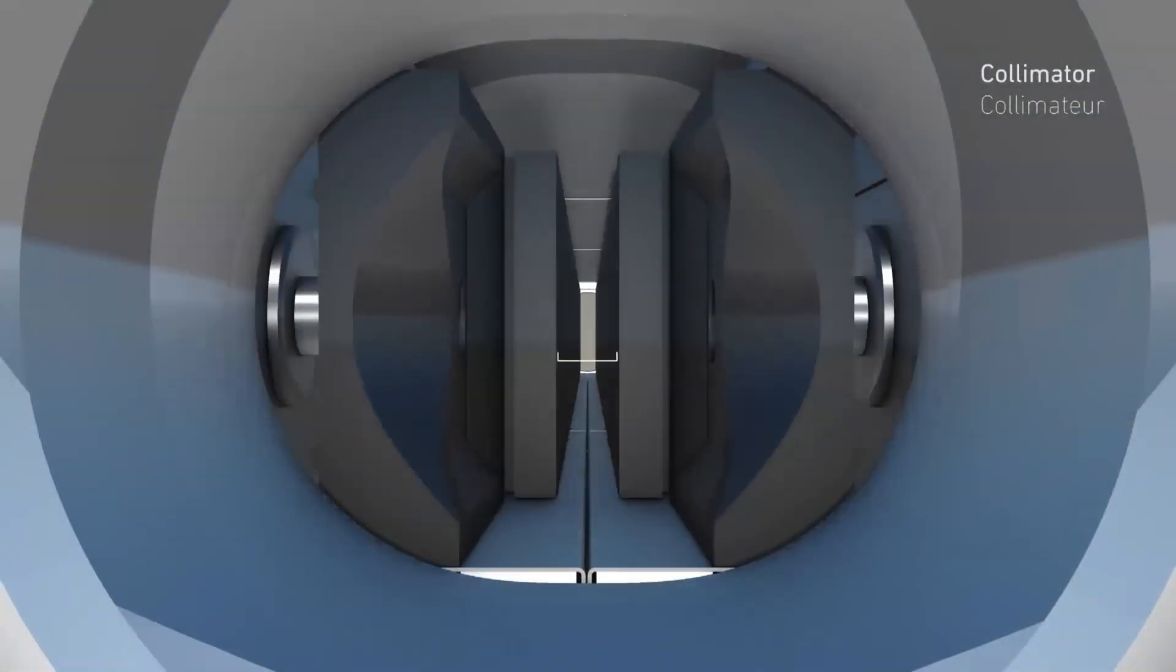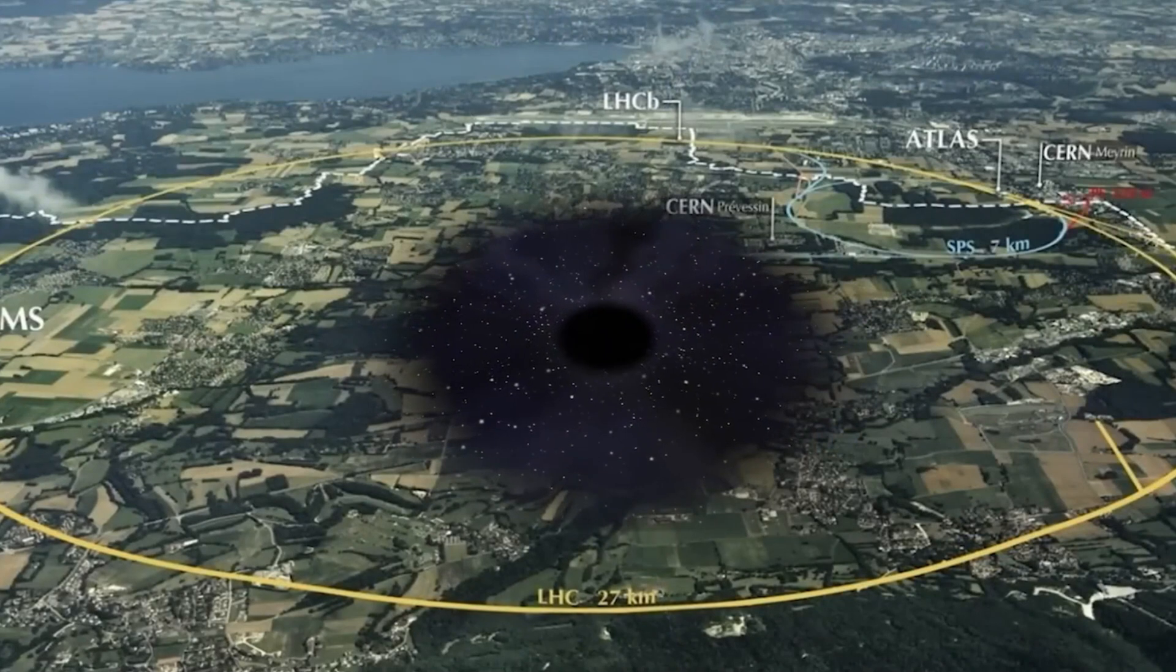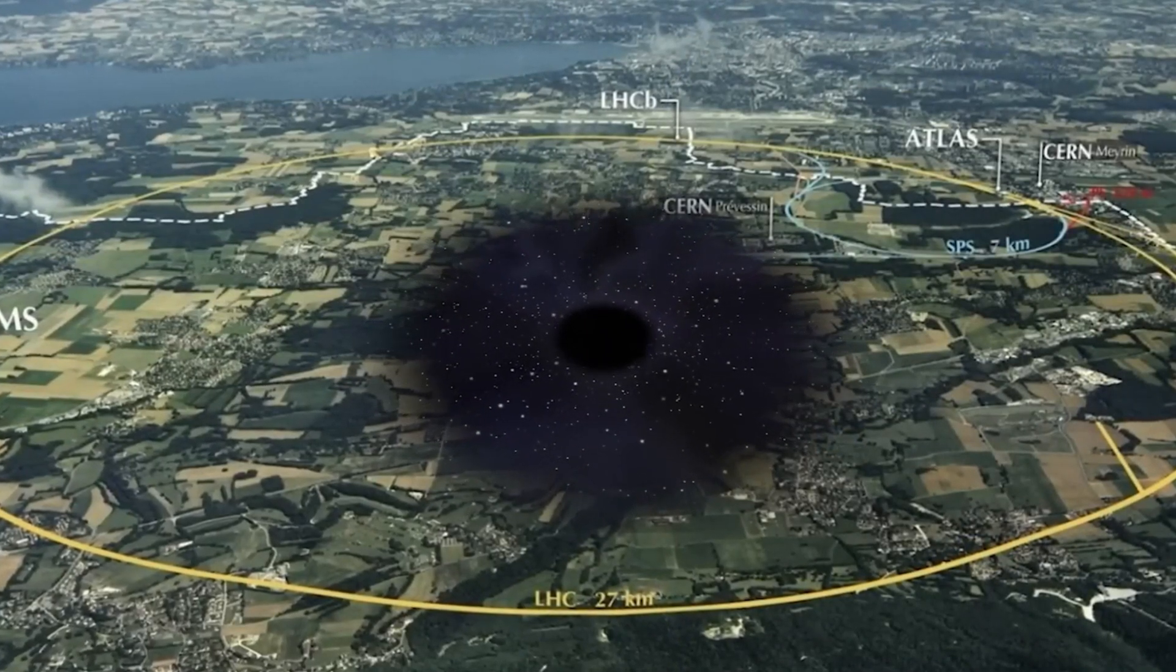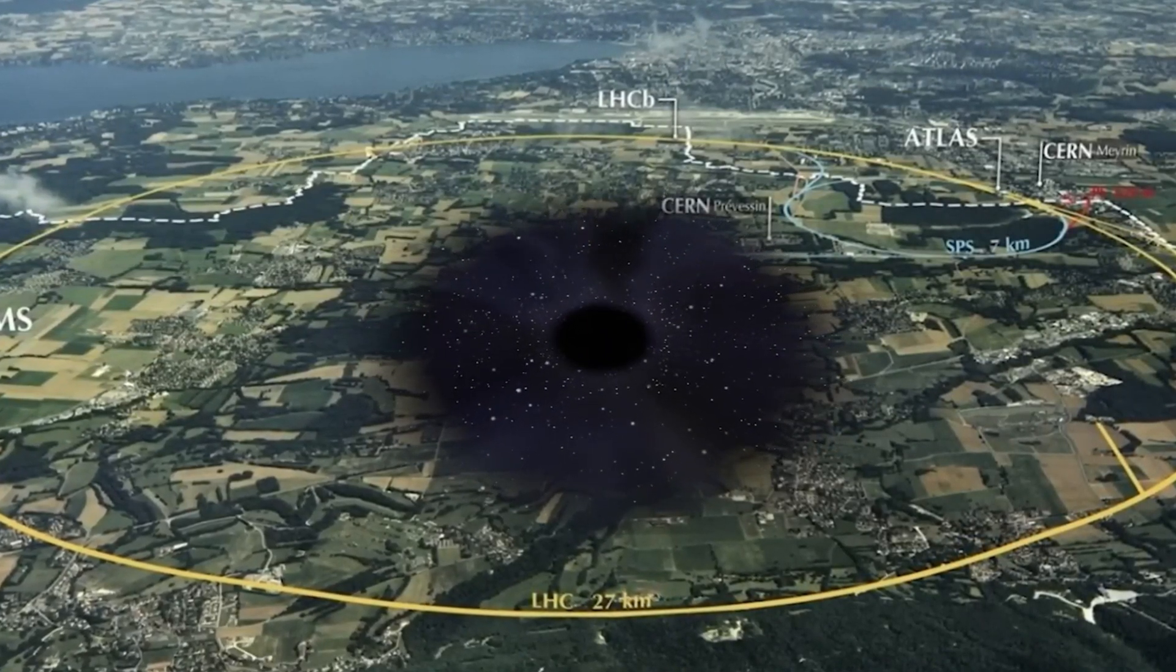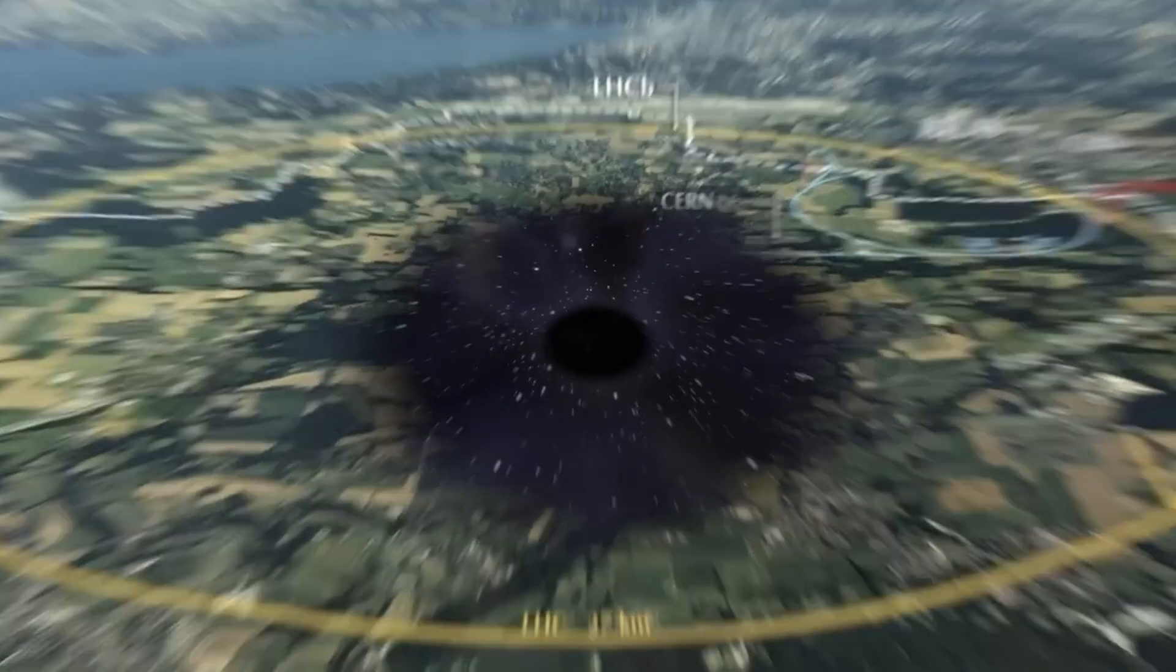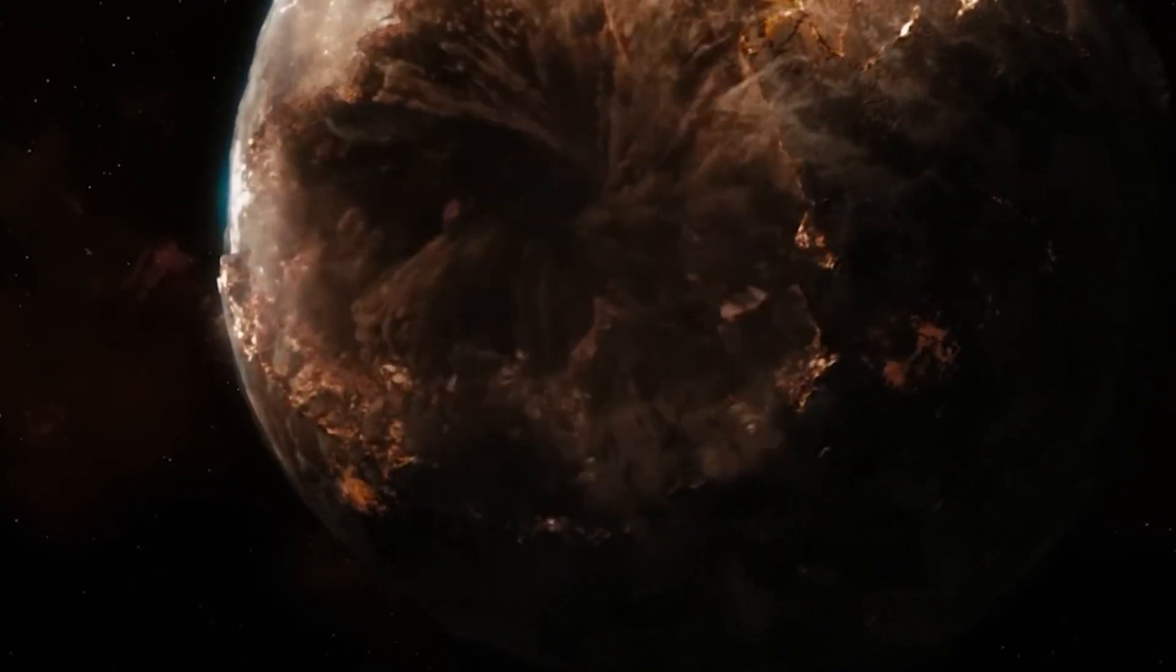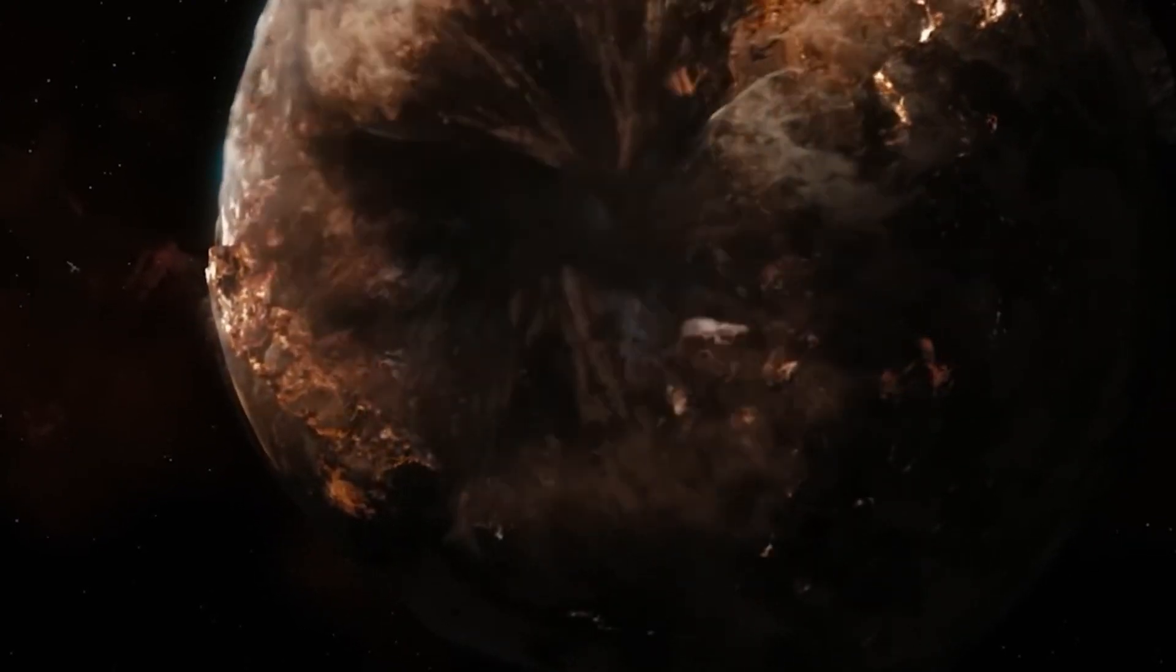In essence, these cosmic collisions occur similarly to the planned collisions inside the Large Hadron Collider, meaning that if the particle beams accelerated by the LHC are indeed powerful enough to create microscopic black holes capable of devouring a planet, scientists should regularly observe the disappearance of planets and asteroids in the solar system.